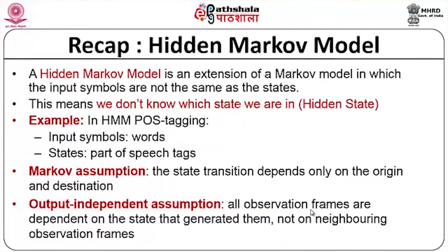Let us do a small recap of the hidden Markov model. A hidden Markov model is an extension of the Markov model in which the input symbols are not the same as the states. In the Markov model the input symbols and the states are the same — what you see is what you get. But in the hidden Markov model we do not know which state we are in; the state is hidden and only the observation is given. A typical example is POS tagging, where the input symbols are the words and the states are the part of speech tags.